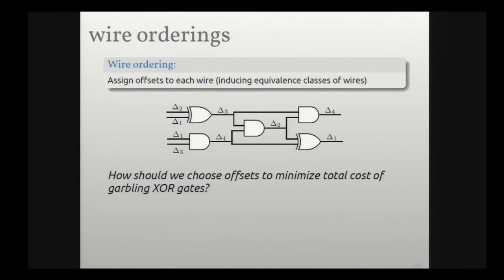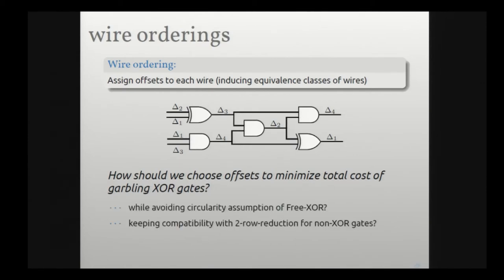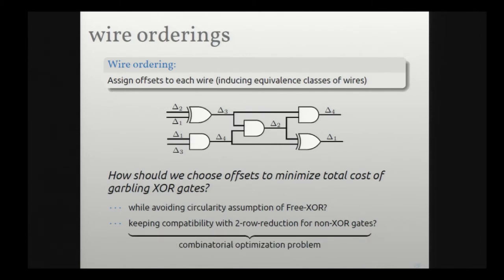One way to choose offsets is to give every wire the same offset, in which case the construction becomes free XOR. But we also want to avoid the two limitations of free XOR. There is a property of wire orderings such that using one with that property avoids limitation one, and another property that avoids limitation two — giving us an interesting combinatorial optimization problem: find the assignment of offsets to wires subject to these combinatorial constraints that minimizes the total cost of the garbled circuit.